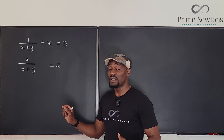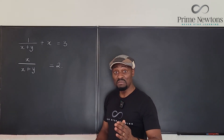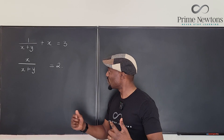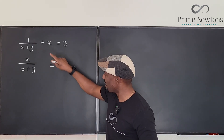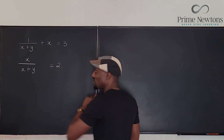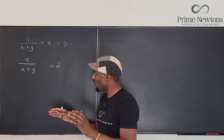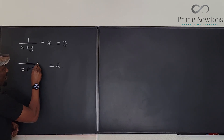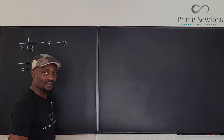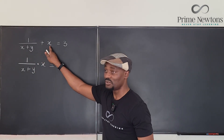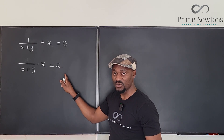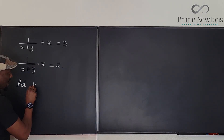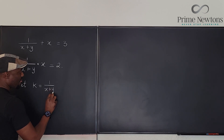By the way, this question is from Denmark 2009. The first time I saw it, I immediately saw a pattern in the first and second equations, so I knew I was going to rewrite them. I saw the first equation as one over x plus y, plus x equals three, and the second one as one over x plus y, multiplied by x. So this is the sum of two things being three and the product of two things being two. I'll let k be equal to one over x plus y.